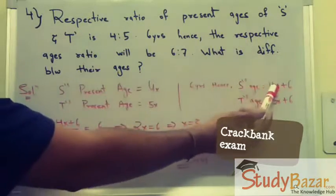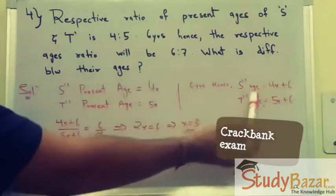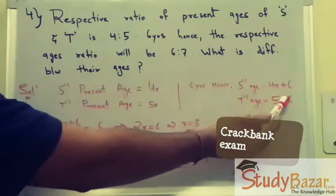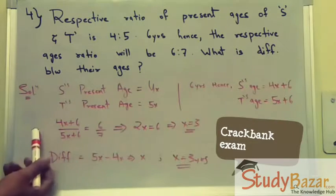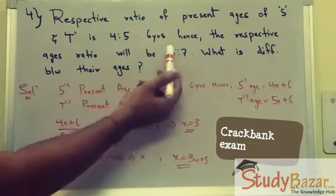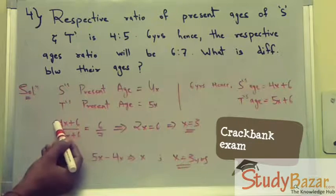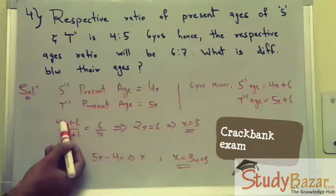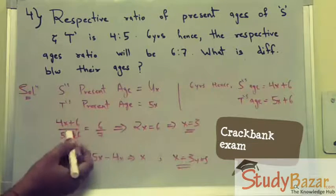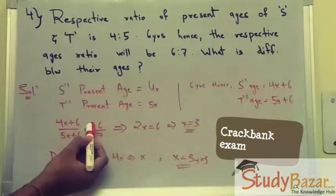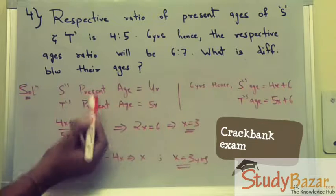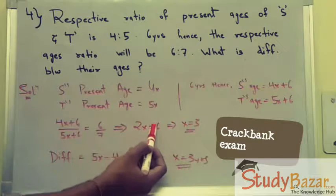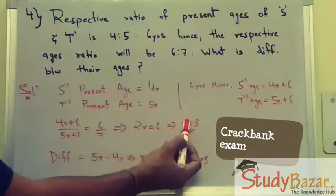Six years hence, S's age will be 4x plus 6 and T's age will be 5x plus 6. It's given that the ratio will become 6:7, so we set up the equation: (4x + 6) / (5x + 6) = 6/7. Cross-multiplying and solving, we get 2x equals 6, so x equals 3.